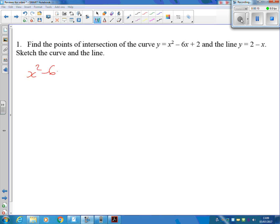So we've got x squared minus 6x plus 2 equals 2 take away x. Let's drag all the algebra over to this side.